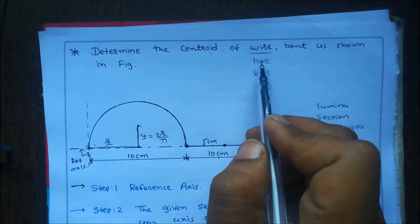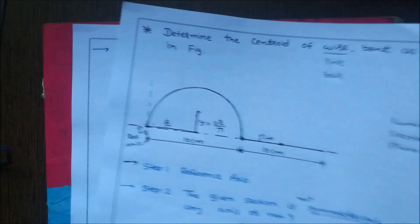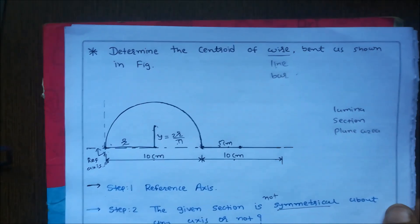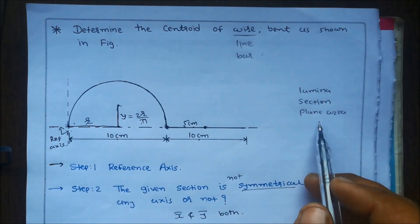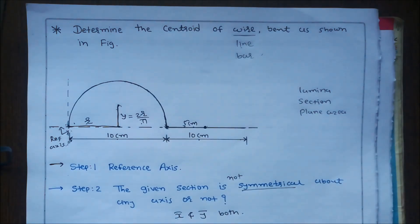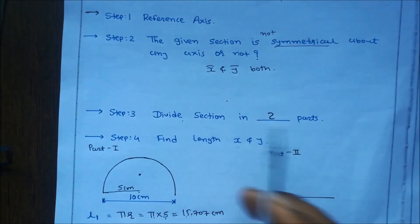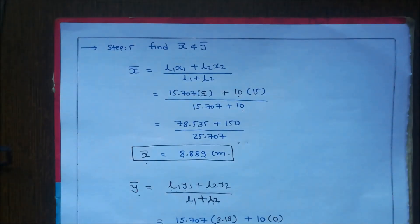Whenever you calculate the centroid, first check if it is a wire, line, or bar — that is one-dimensional — and use the one-dimensional formula: X-bar = (L1·X1 + L2·X2) / (L1 + L2), finding length. If lamina, section, or plain area is used, that is two-dimensional. For finding the centroid, follow these steps: step one — reference axis; step two — symmetrical axis; step three — divide section into parts; step four — find length, X1, Y1, X2, Y2; step five — find X-bar and Y-bar. In this way you can easily calculate the centroid of a wire.